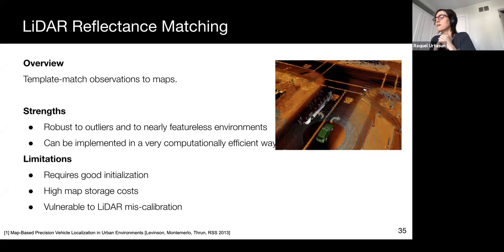These methods can be much more robust than geometric ones, especially in mostly featureless environments. For example, here in the middle of a desert. The template matching itself can also be implemented in a very computationally efficient manner, and achieve centimeter level accuracy.